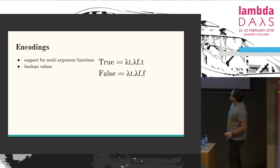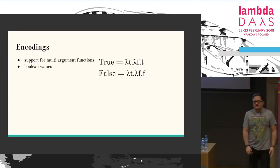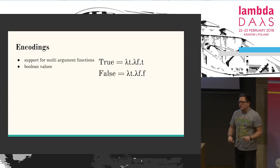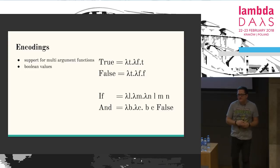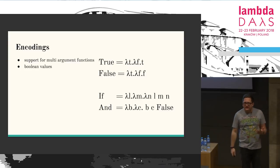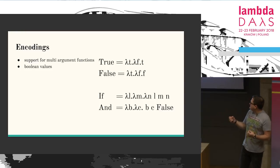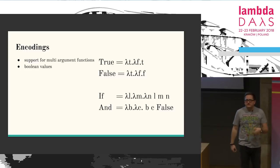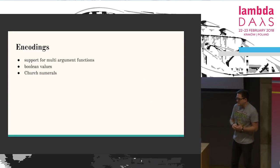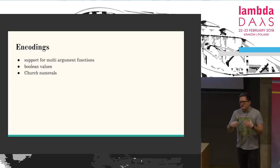The same thing for boolean values — you can have encodings for true and false. If you have encodings for true and false, things like AND or IF will work by just applying beta reduction. If you call IF with true it gives you the first branch back, IF with false gives you the other; AND with false and false is false, true and true is true. There's also Church numerals for encoding natural numbers in lambda calculus. All those features are available, and the formalism is sort of complete.